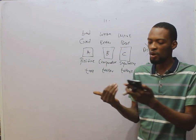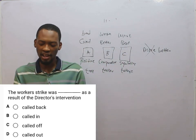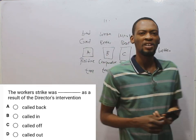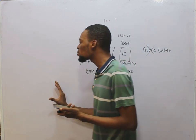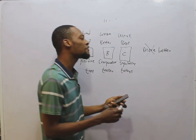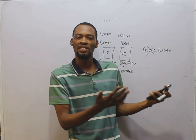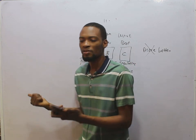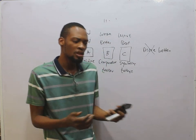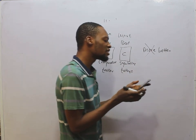The worker's strike was dashed as a result of the director's intervention. The options are called back, called in, called off, and called on. You may have heard: they've called off the strike — meaning they've brought the strike to an end and you can resume work. To call off a strike simply means to put a strike to an end, to resume work. So called off is the most appropriate.